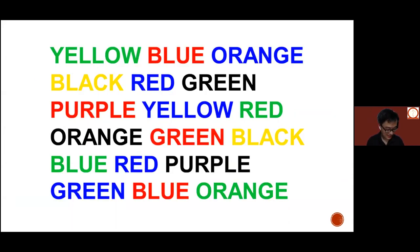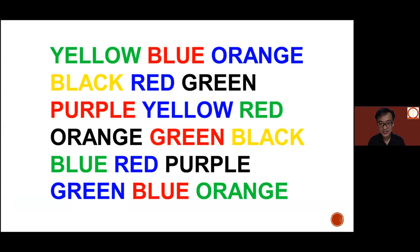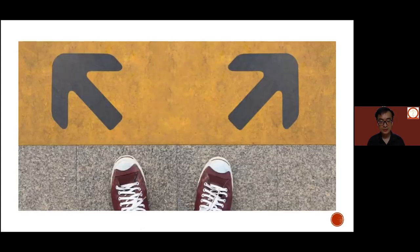Sometimes our brain doesn't work the way it should. A good illustration is trying to read out color words where the ink color conflicts with the word spelled — most of us struggle because one set of stimuli tells us it should be one way, while visually it suggests something different. This tells us that sometimes we may not be thinking straight because of how we've wired our habits of thinking.